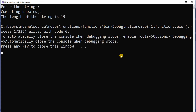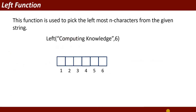The length of the string is 19 — there are 19 characters in the 'computing knowledge' string. Next is the Left function. This function is used to pick the leftmost characters from a given string. You write Left, then give the string — for example 'computing knowledge' — and a number, say 6. It will pick 6 characters: c, o, m, p, u, t.